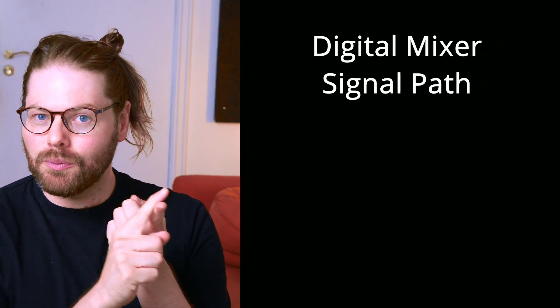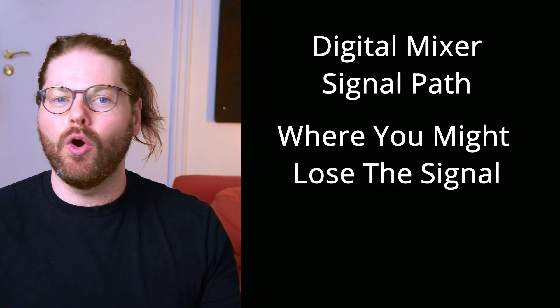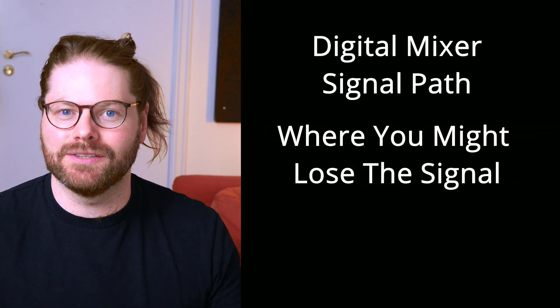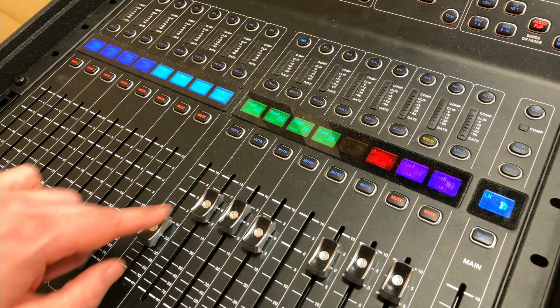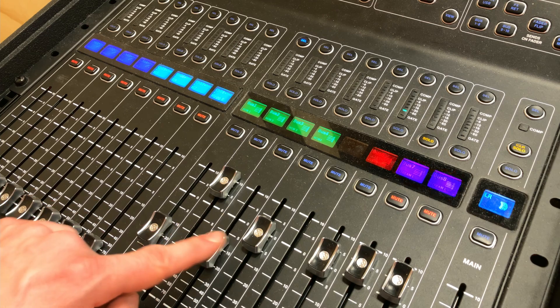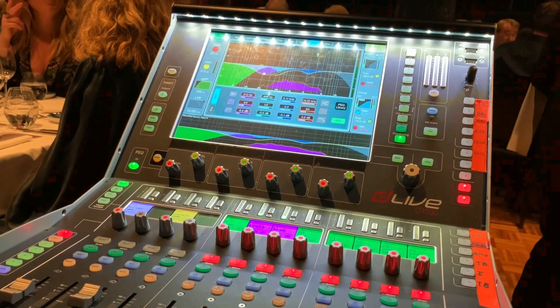In this video we're going to take a look at the signal path — where the microphone comes in and all of the places where we might lose that signal or not get the correct signal along the way, all the way to the speakers. I'm going to show you on an M32 mixer, but the practice of following the signal applies to literally any mixer; you just need to find the right buttons to press to find the information I'm telling you here.